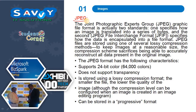The next format is JPEG, the Joint Photographic Experts Group. The graphic file format is actually two standards: one specifies how an image is translated into a series of bytes, and the second, JPEG File Interchange Format (JFIF), specifies how the data is encapsulated into a file format. JPEG files are stored using one of several lossy compression methods to keep images at a reasonable size. The compression scheme sacrifices being able to accurately reconstruct all data present in the original image.